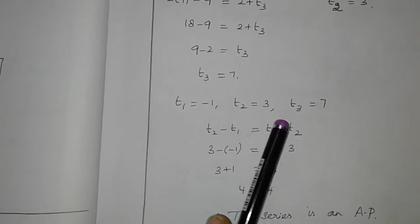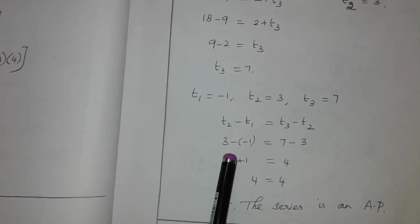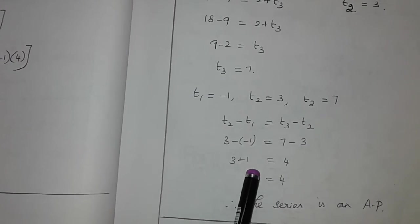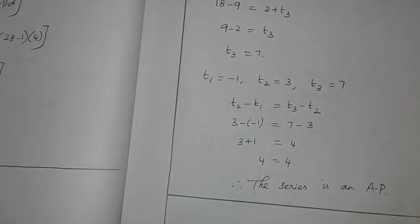T3 is equal to 7. Then 7 minus 3, which is 4. T2 minus T1 is 3 minus minus 1, which equals 3 plus 1, which is 4. 4 equals 4. The difference is same. Therefore the series is an AP.